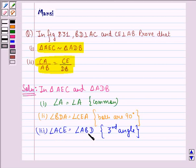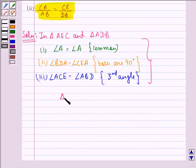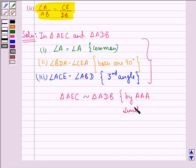So from these three we have triangle AEC is similar to triangle ADB by angle, angle, angle similarity criterion.